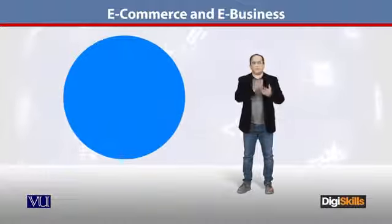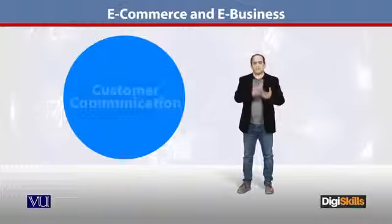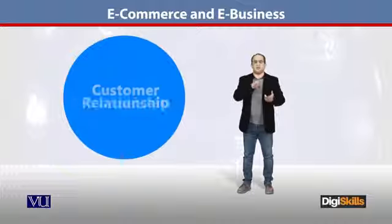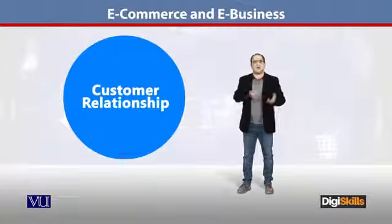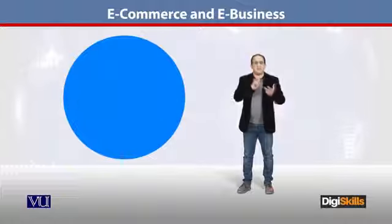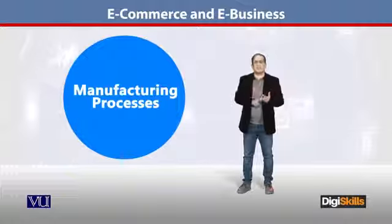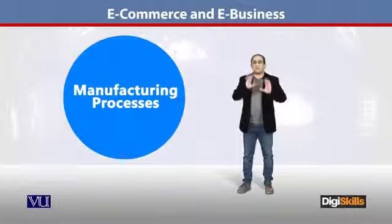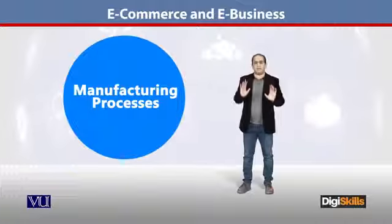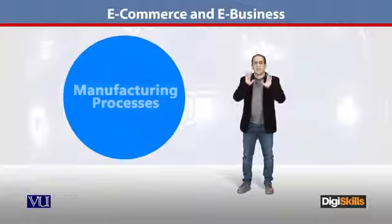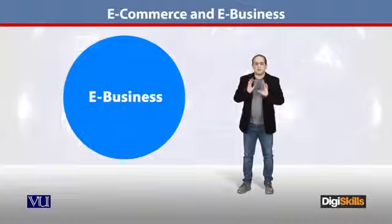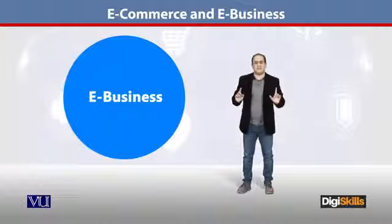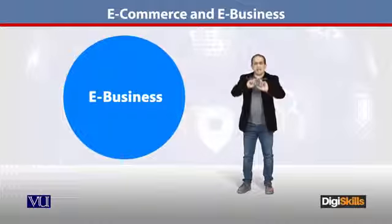E-business can include order processing, customer communication, customer relationship, and the manufacturing process — how they are managed electronically. It can manage all these things. The electronic business is a bigger chunk; it is a superset.